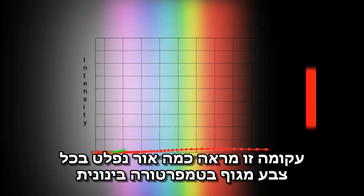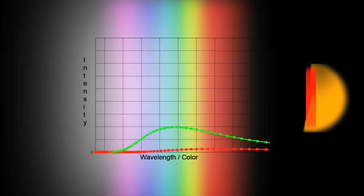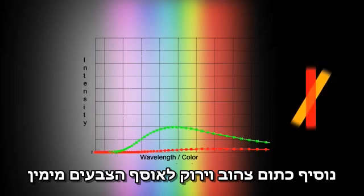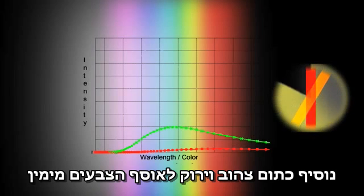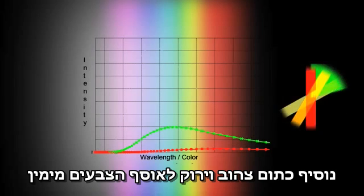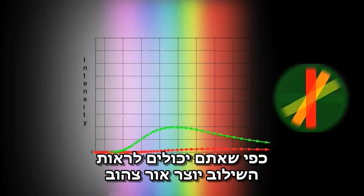This curve shows how much light of each color is emitted by a medium temperature object. And the most light is emitted in the orange, yellow, green wavelengths. So, now we add orange, yellow, and green to our cauldron of light on the right. As you can see, the combination so far looks yellow.